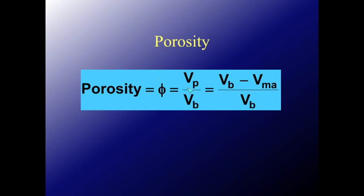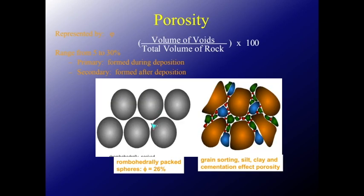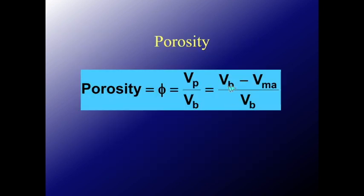Here we will formulate it in terms of volume. We use φ (phi), which is typically the volume of pore — where 'p' refers to pores, void, or space — divided by Vb, where 'b' denotes bulk. Bulk means the total volume, including rock (solid) and space. We can also express this as Vb minus Vm, where 'm' means matrix — the solid part only.